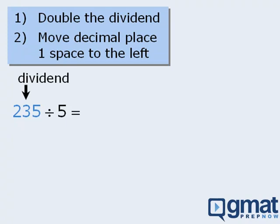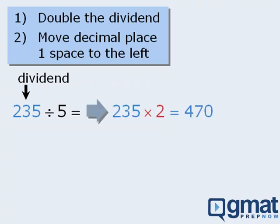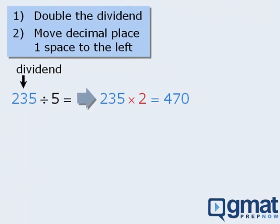Let's try a few examples. To divide 235 by 5, we'll take 235 and double it to get 470. And then we'll take the decimal place, which is assumed to be here, and move it one space to the left to get 47.0. So 235 divided by 5 is equal to 47.